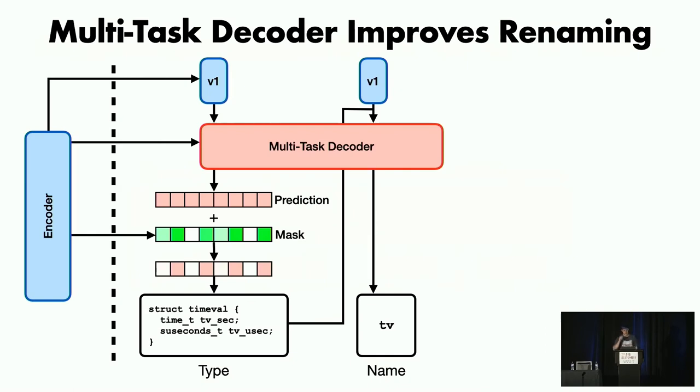One thing we noticed during the development of our original renaming system is that better types means better names. So we just plugged in a new decoder, trained it, and found that it actually does improve on the state of the art. It moves it from 72.8 to 81.4 percent.